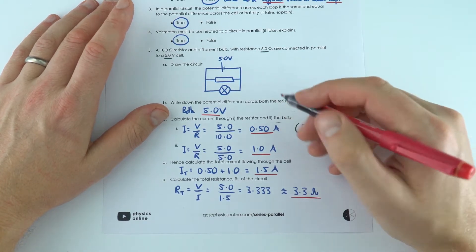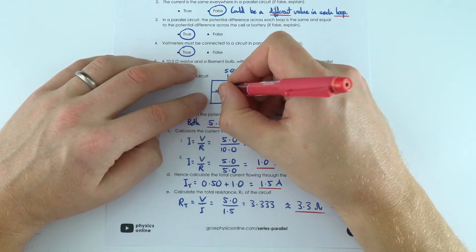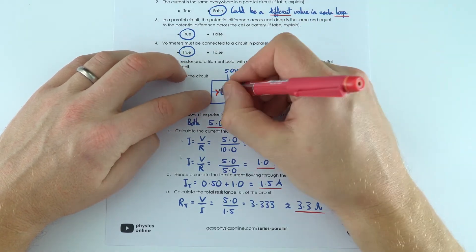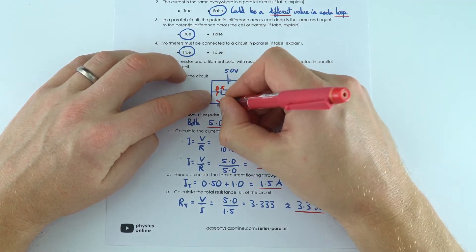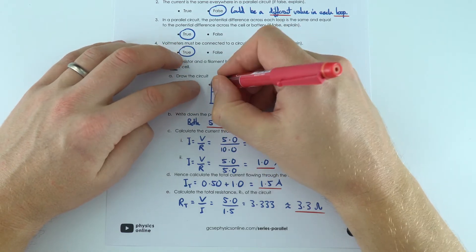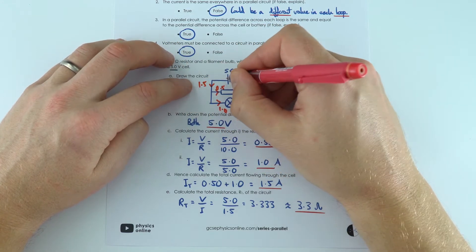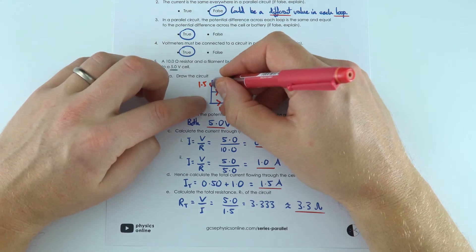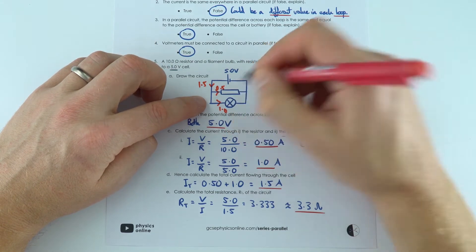And that means the total current, and again this is where you can actually mark up your diagram, through the resistor it's 0.5, through the bulb it's 1.0. That means there must be 1.5 coming from that cell where 0.5 goes that way leaving 1.0 to go that way.